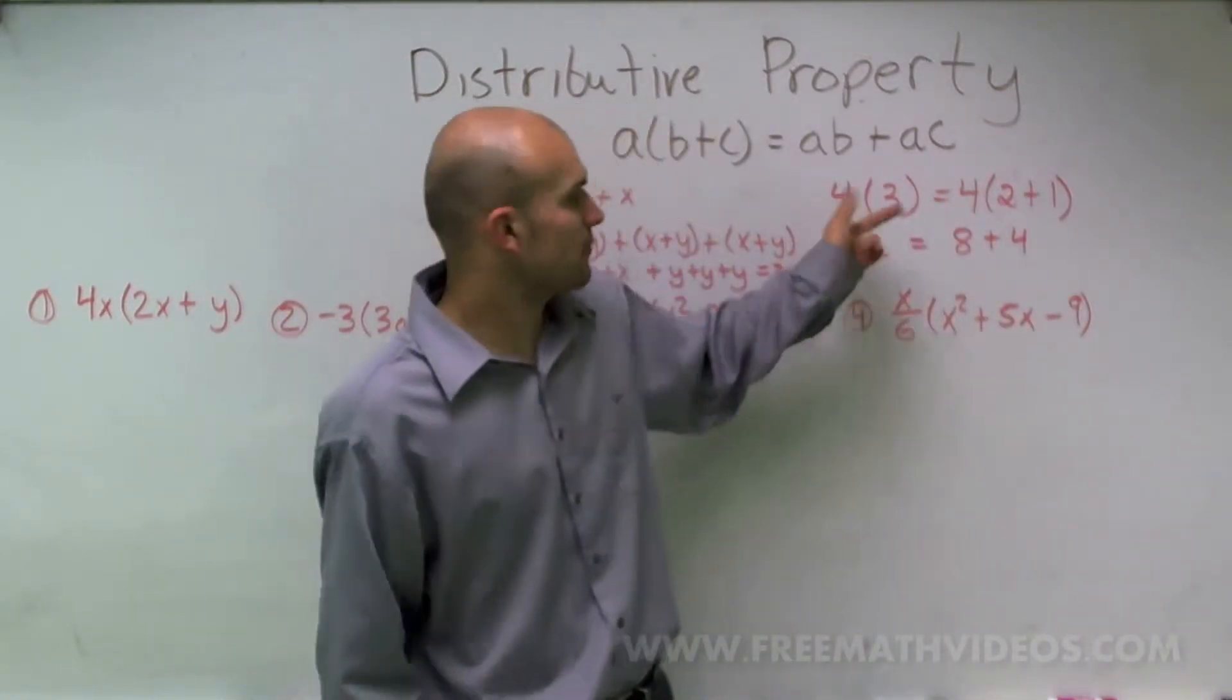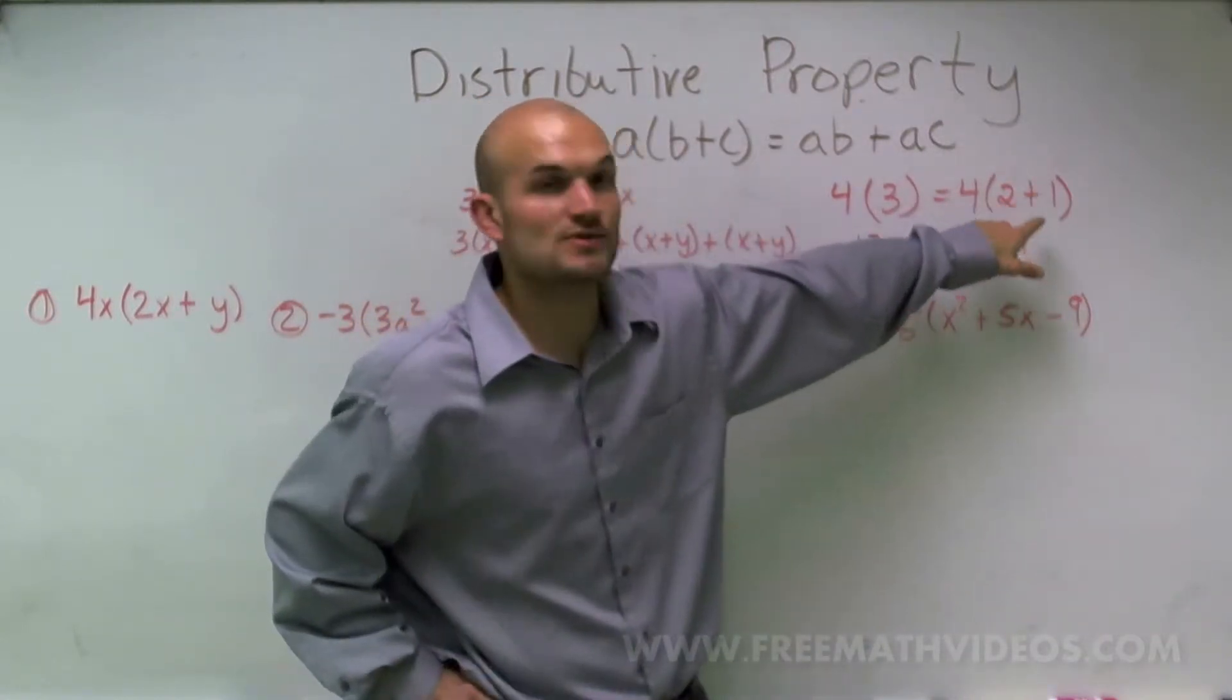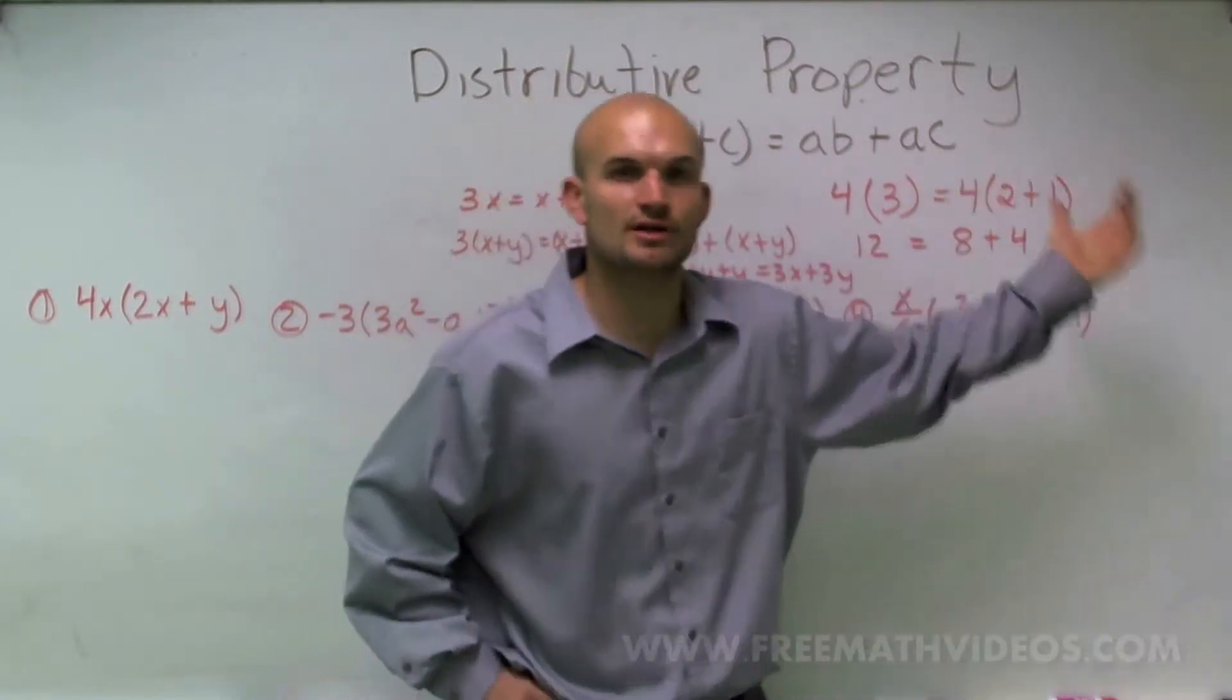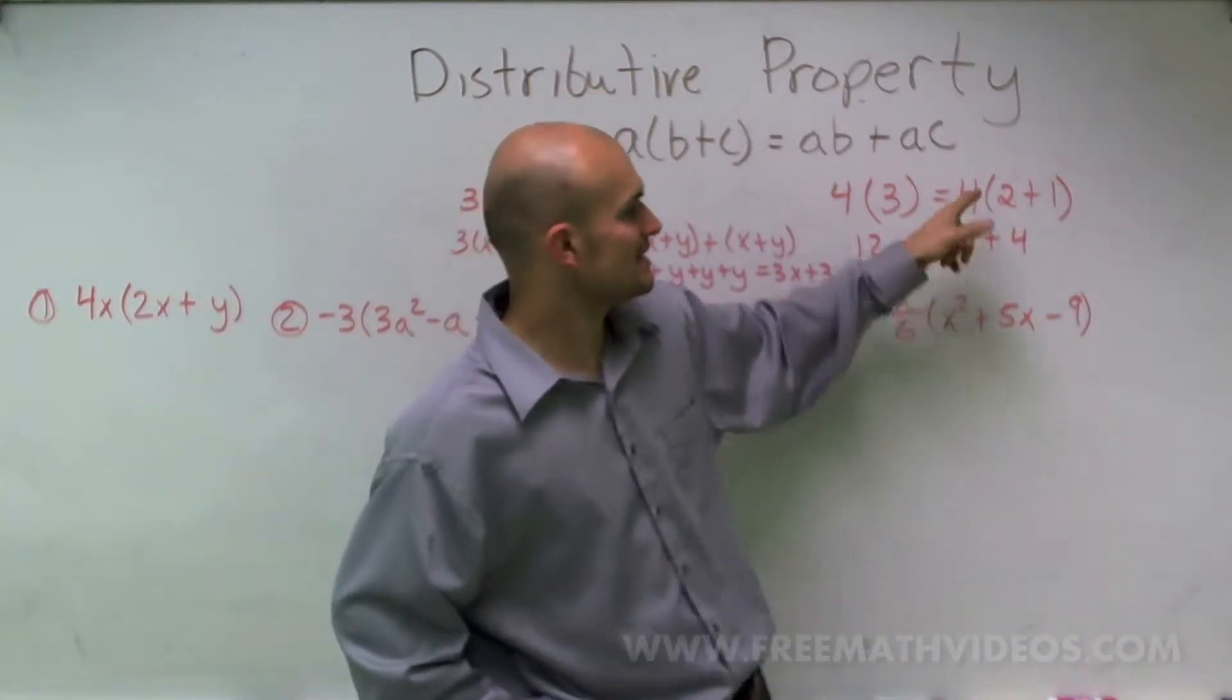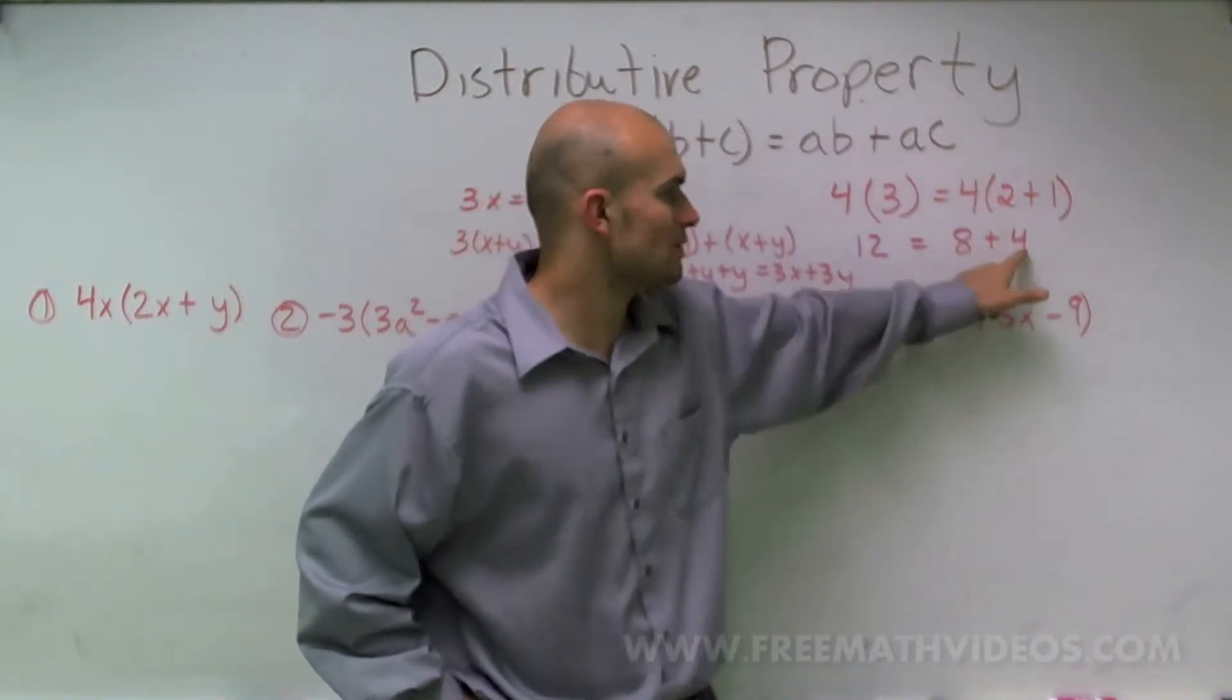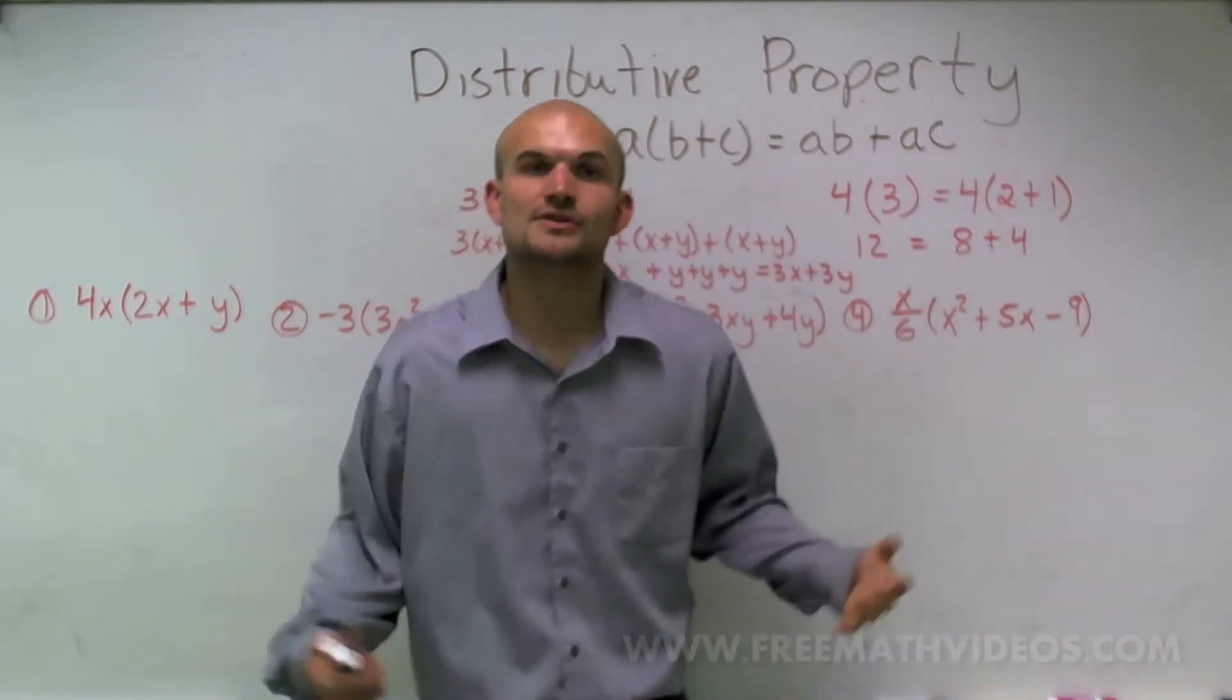Well, multiply 4 times 3, that's just a number times a number, we're going to get 12. However, since I rewrote 2 plus 1, what I'm going to have to do is use the distributive property. Now, obviously, if you're simplifying a problem, you could add those together and multiply. But for my case here, if I use the distributive property, I have 4 times 2, which is 8, plus 4 times 1, which is 4. Therefore, what we notice is 8 plus 4, we know is going to equal 12. So the distributive property works.